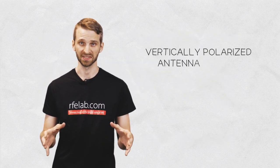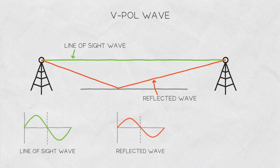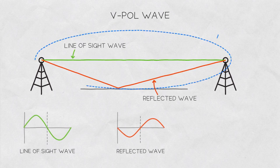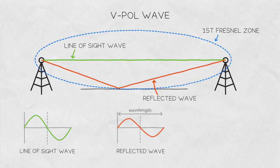Let's take a vertically polarized antenna system first. When a vertically polarized wave reflects from a horizontal surface, it flips its phase. Additionally, compared to the line of sight wave, the wave reflected from the first Fresnel zone border is half a wavelength delayed.